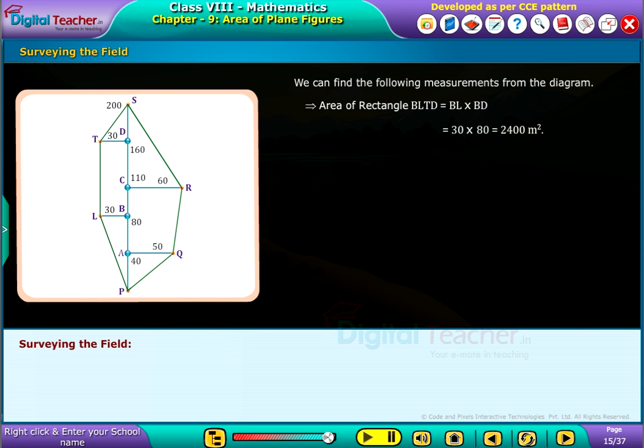That equals 30 into 80 which is 2400 square meters. Area of triangle PBL equals half into PB into BL, that equals half into 80 into 30 which is 1200 square meters.